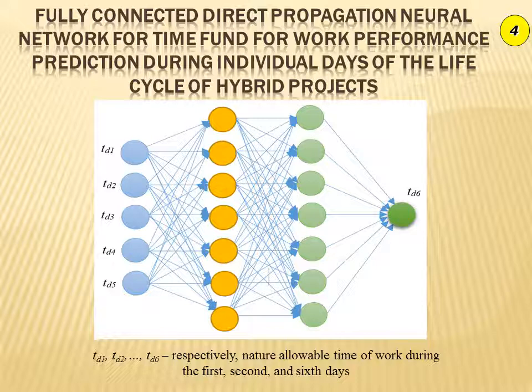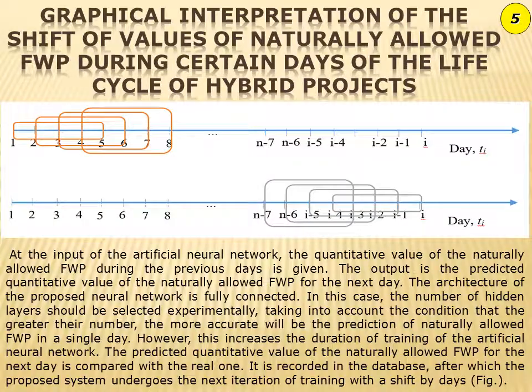It is known that the transition time of the humidity deficit threshold largely coincides with the time of periods of disappearance of dew. To build a system using a neural network, first of all, the choice of its architecture is performed. The architecture of the neural network is selected experimentally on the basis of the technical tasks, and the artificial neural network of direct propagation was chosen for the proposed system. The architecture of the proposed neural network is fully connected.